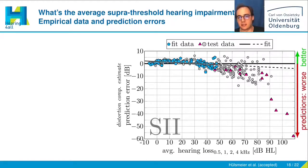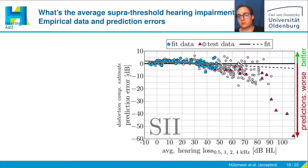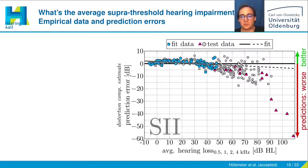This indicates that the SII already considers too much in its prediction, such that more impairment in the form of some kind of distortion component could not improve the predictions but only make it worse. Since adding more hearing impairment will make SRTs worse, the SII is not modifiable to consider the D component in its prediction.